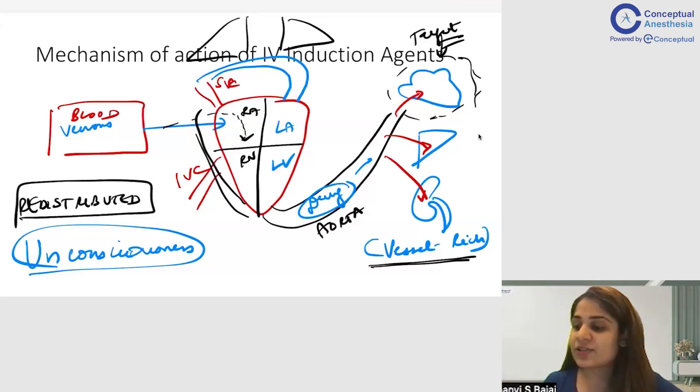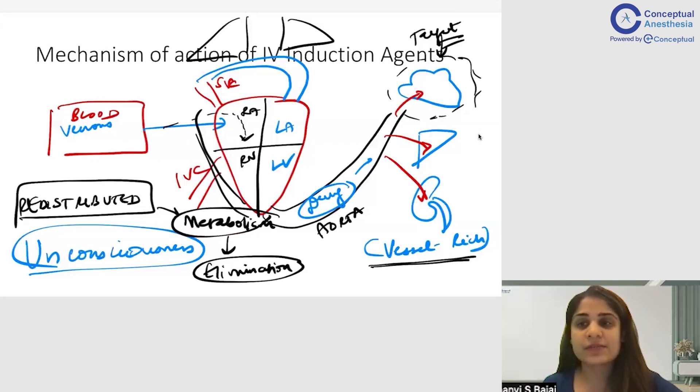Eventually, this drug is metabolized after some time and after metabolism, it undergoes elimination in the body. Now, we are going to be discussing each and every drug: where do they get metabolized, where do they get eliminated, how do they get redistributed, what are the important properties. But these are the basics of IV anesthetic agents that you should know.